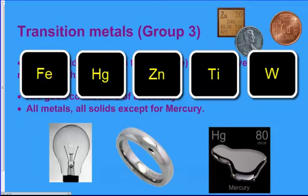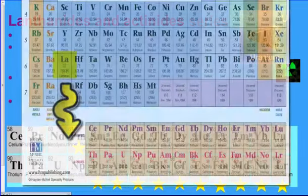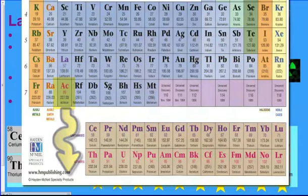But we also have two rows at the bottom that's also involved with transition metals. And that's the lanthanide and actinide series. It's called the lanthanide series because it starts with the element lanthanum. And it's called the actinide series because it starts with the element actinium.